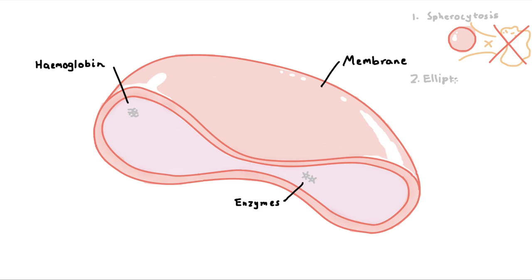In hereditary elliptocytosis, RBCs are prone to being deformed as they squeeze through your capillaries. Normal RBCs bounce back easily from this kind of stress, but a lack of membrane proteins makes these RBCs lose this ability. They are squished into a permanent ellipse and follow the same fate as spherocytes once they've reached the spleen.